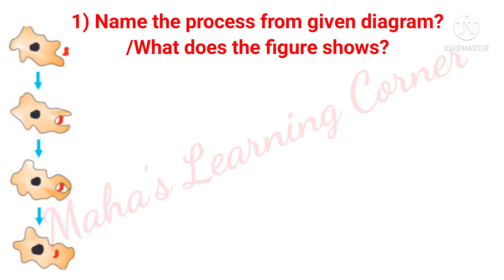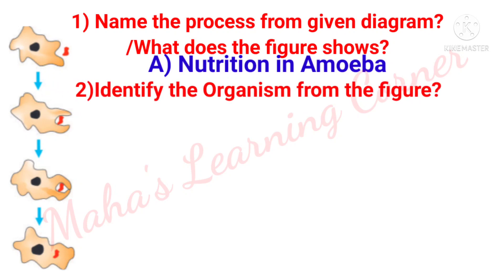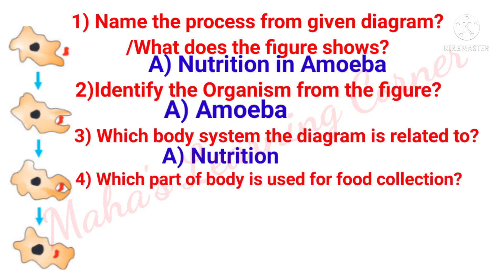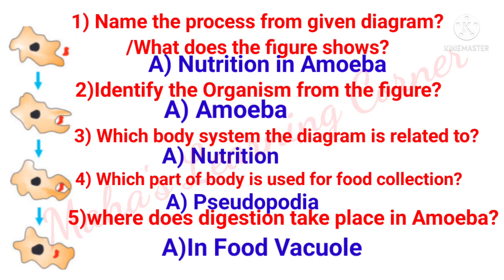Name the process from the given diagram or what does the figure show? Answer: Nutrition in amoeba. Identify the organism from the figure. Answer: Amoeba. Which body system does the diagram relate to? Answer: Nutrition. Which part of the body is used for food collection? Answer: Pseudopodia. Where does digestion take place in amoeba? Answer: In the food vacuole.